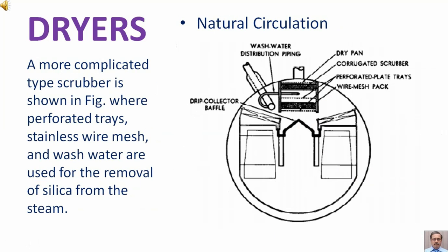A more complicated type scrubber is shown in figure, where perforated trays, stainless wire mesh, and wash water are used for the removal of silica from the steam.